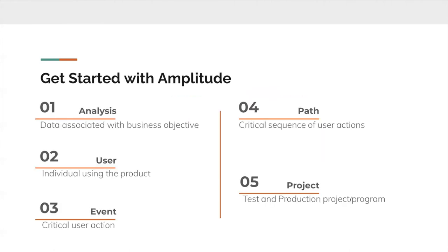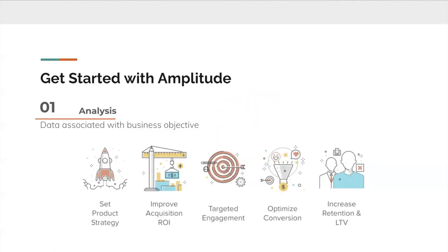Five things to consider while provisioning Amplitude for your organization. First: analyses. Define your business objectives. Develop features that intersect customer and business value and reflect the customer problem your product is trying to solve. A data-informed product strategy is guided by the principle that the more you understand your customers, the better you can serve them.